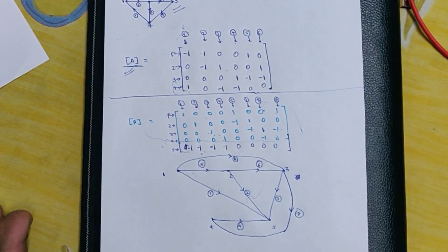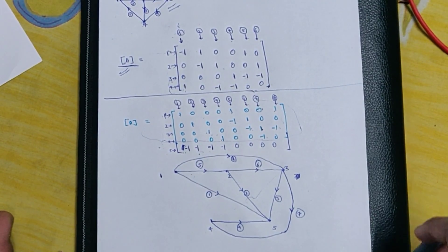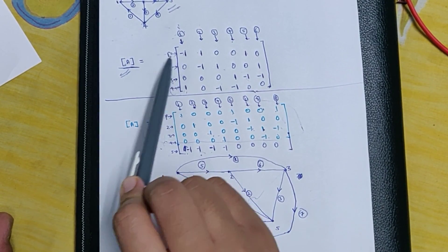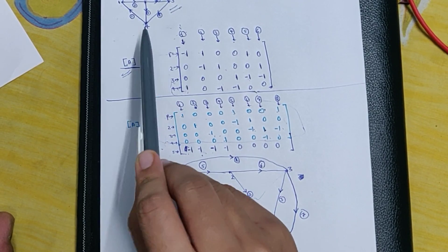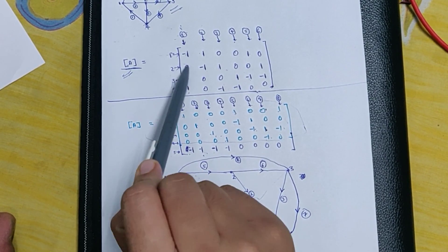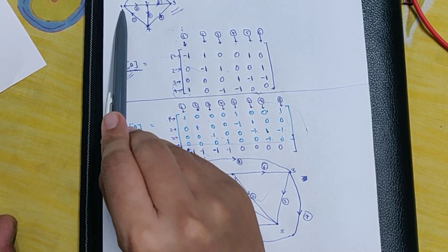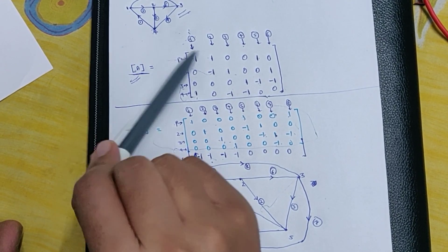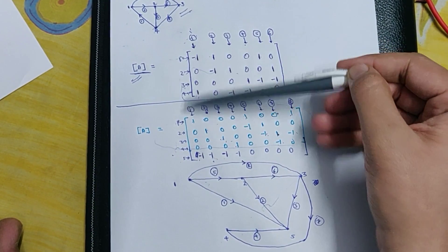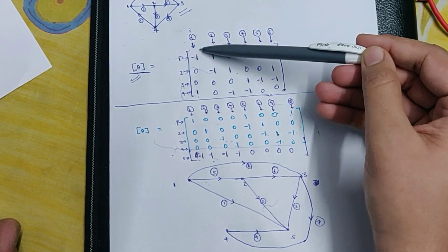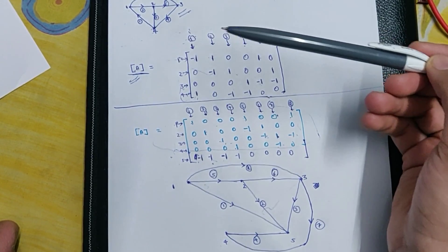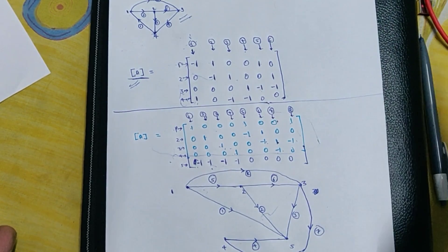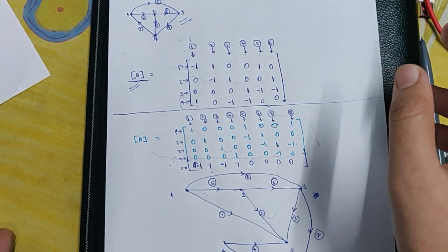I hope you all understood what I taught in this lecture. The main thing to remember is how to take directions: +1 is from where the current is starting, and -1 is from where the current is ending. Also remember the property of the incidence matrix: the sum of all the elements in any column is zero. Thank you — if you liked the video, you should continue to watch the next part and also watch the previous part.